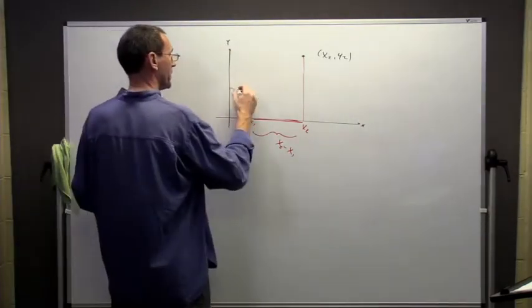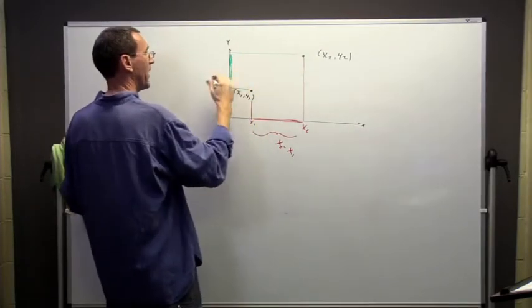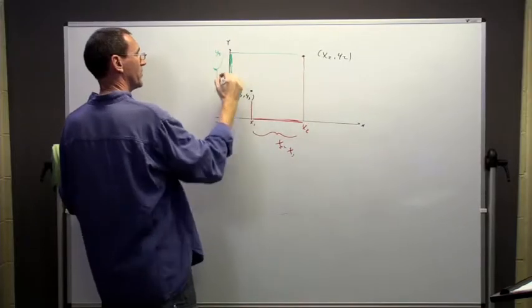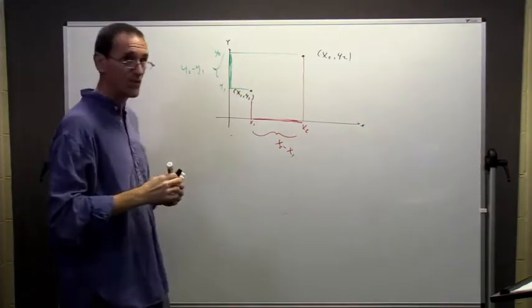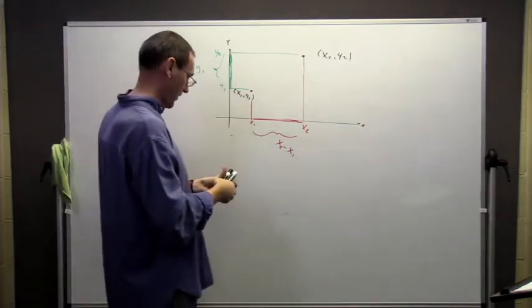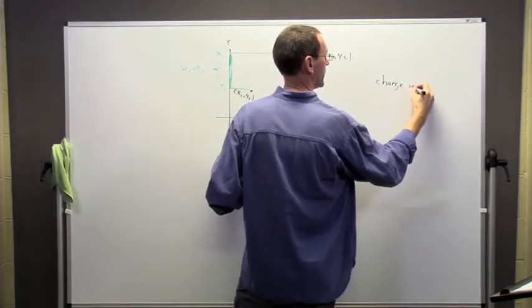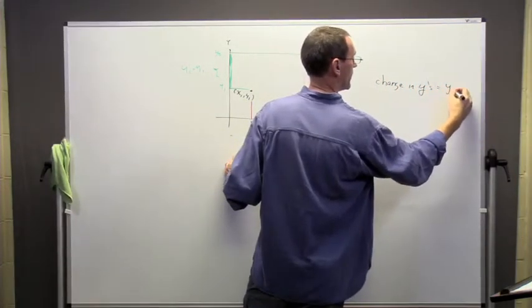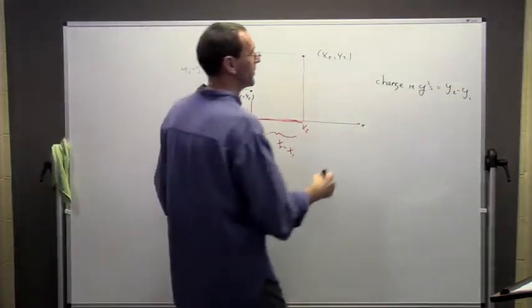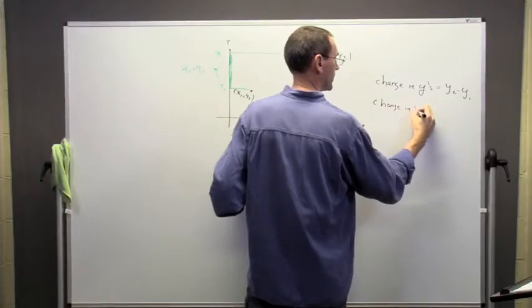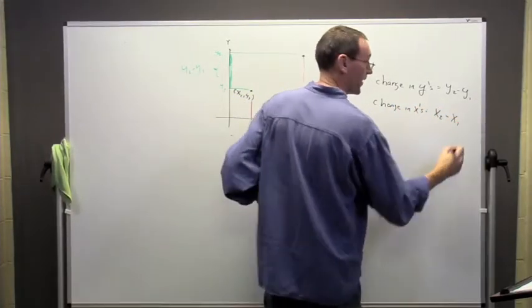In terms of the change in y's, it's going to be that distance here. This goes from y2 to y1, and that's just y2 minus y1. So what do we have? We have the change in the y's or the change in the outputs are y2 minus y1. The change in the inputs are x2 minus x1.